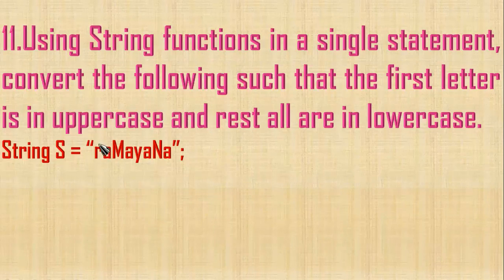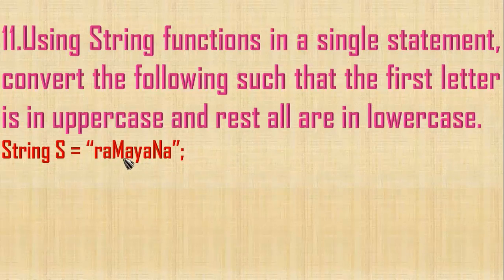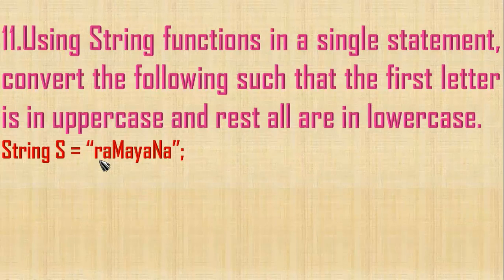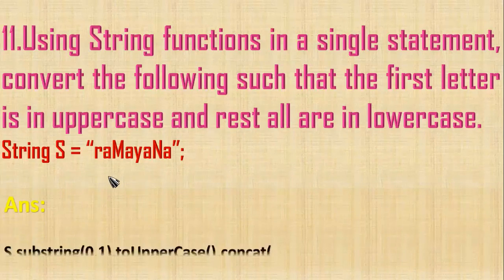We have to take the first letter and then convert it into uppercase. To convert to uppercase, we use string dot toUpperCase. Then to change into lowercase, leaving the first letter, all other letters should be taken, then dot toLowerCase. How to extract the first letter using string functions? We know that we have substring, so we can give s dot substring of 0 comma 1. That will take only the character at index 0, then dot toUpperCase.